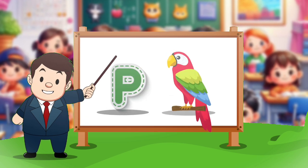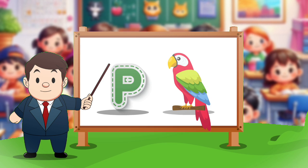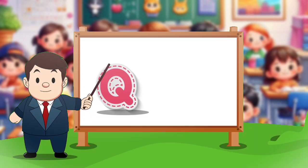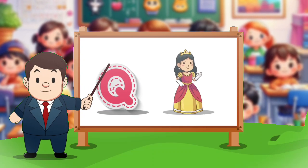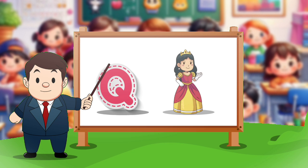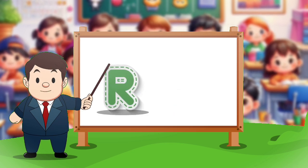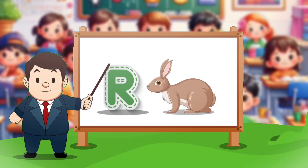P. P for parrot. Q. Q for queen. R. R for rabbit.